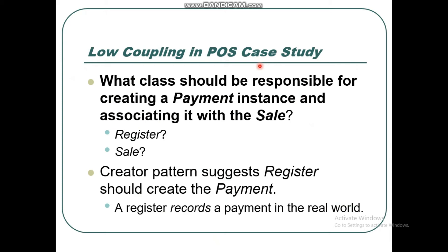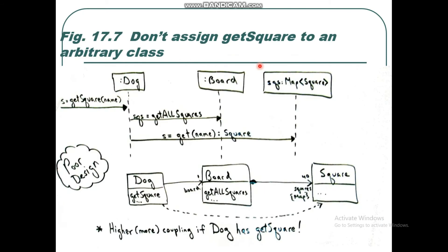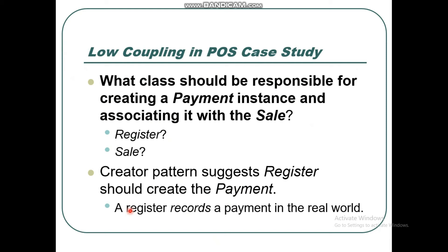Before the next example, let's study the Low Coupling principle using the POS (Point of Sale) case study. We have seen in the last slide that the Dice and Square classes should not be coupled unnecessarily, as that increases coupling. Now in the POS case study, the problem is: which class should be responsible for creating a Payment instance and associating it with the Sale?